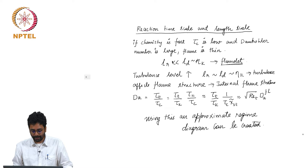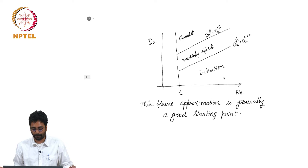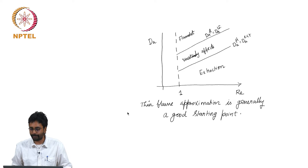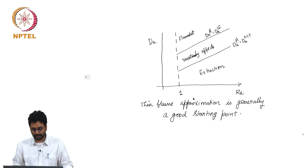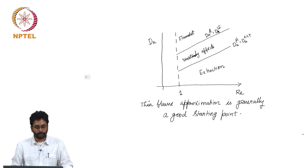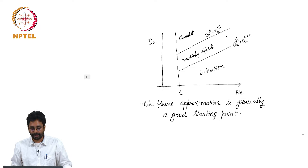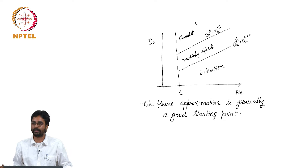Using this, we can create an approximate regime diagram for turbulent non-premix flames. The key criteria are: the reaction zone much smaller than the Kolmogorov scale, and the case where the reaction zone thickness becomes comparable to the Kolmogorov scale. Diffusion flame regime diagrams are a hotly debated topic, so this is only a simple representation. Until Reynolds number equals 1 we have laminar flames; when the flame Damköhler number is greater than the laminar flame Damköhler number, we have the thin flame approximation where the internal structure of the reaction zone is not affected by turbulence.